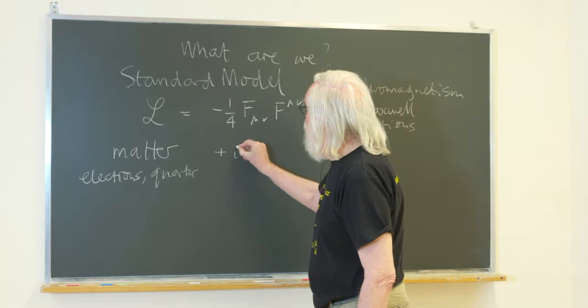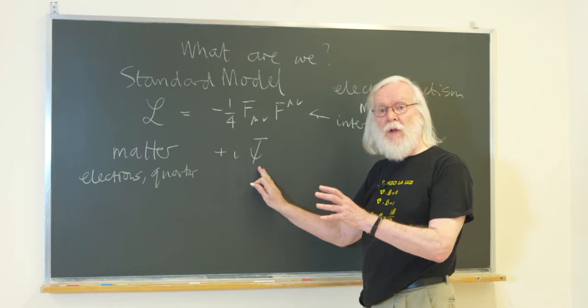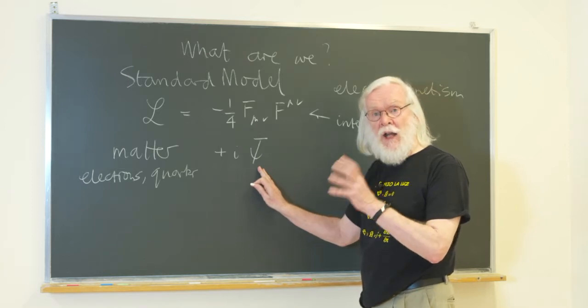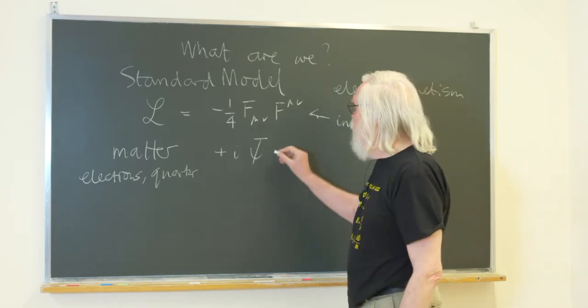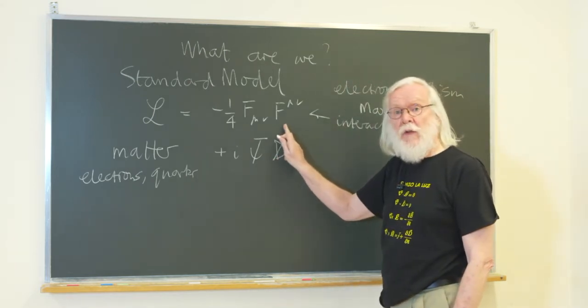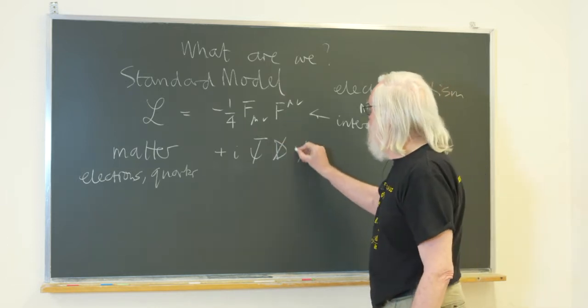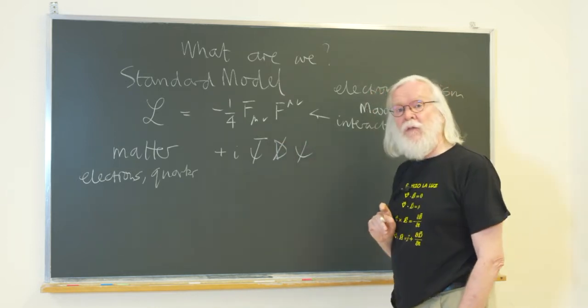We write this in the form i psi. This Greek symbol represents an antimatter particle. This represents the way that one of these interactions works on one of these particles of matter, and there's the particle of matter there.